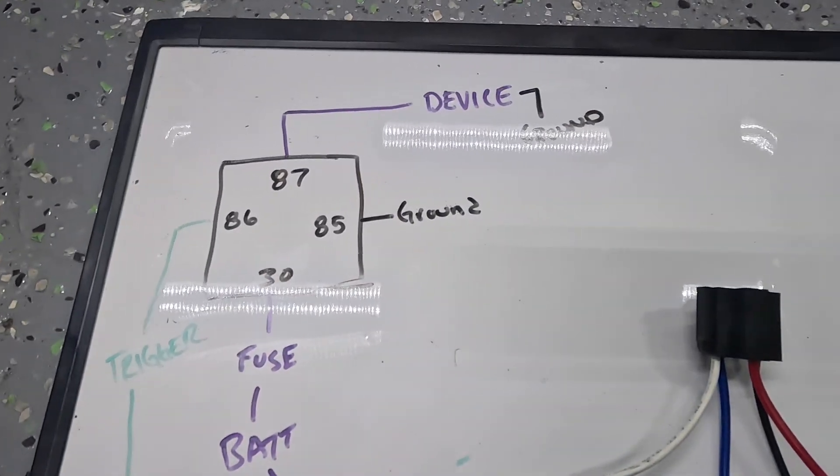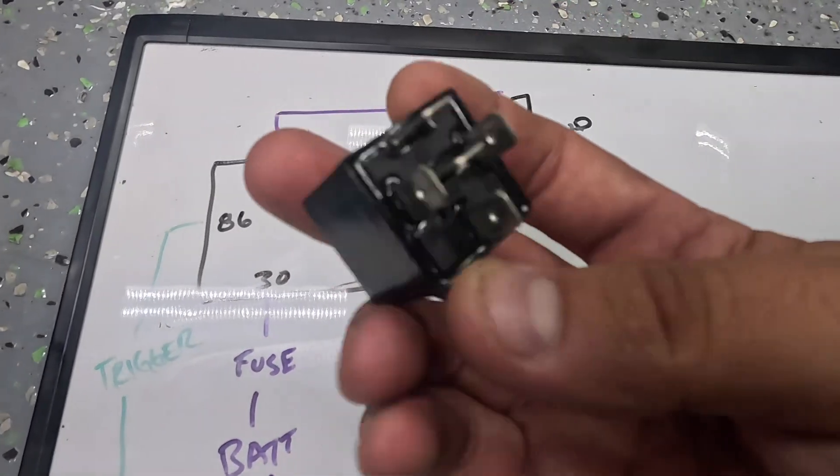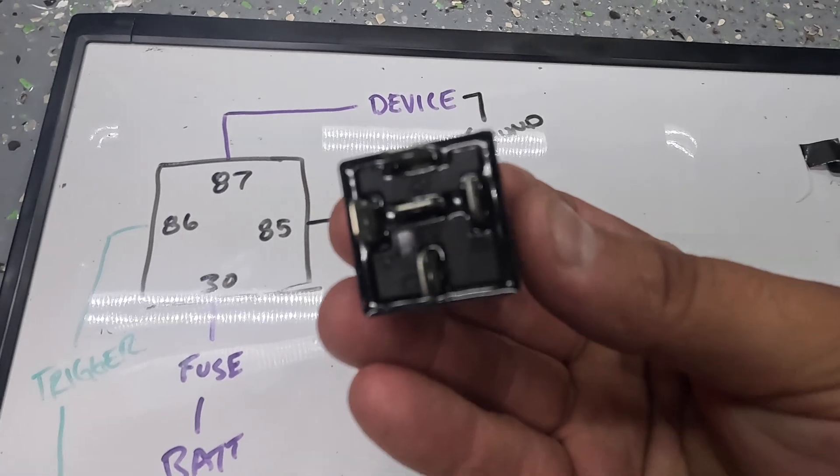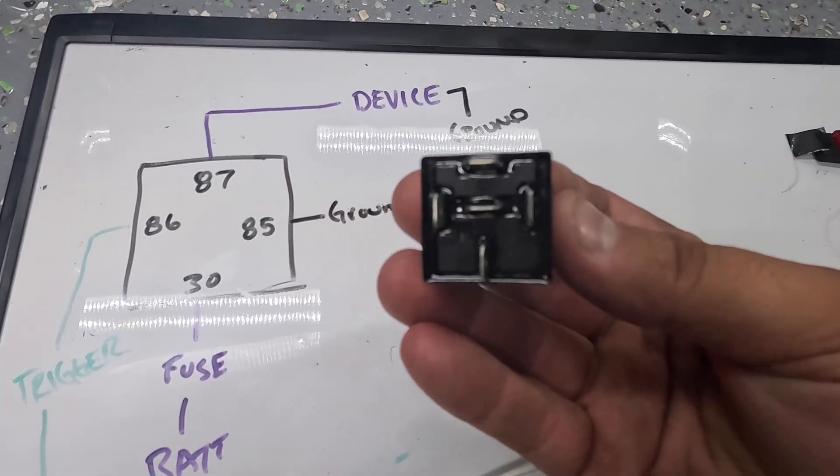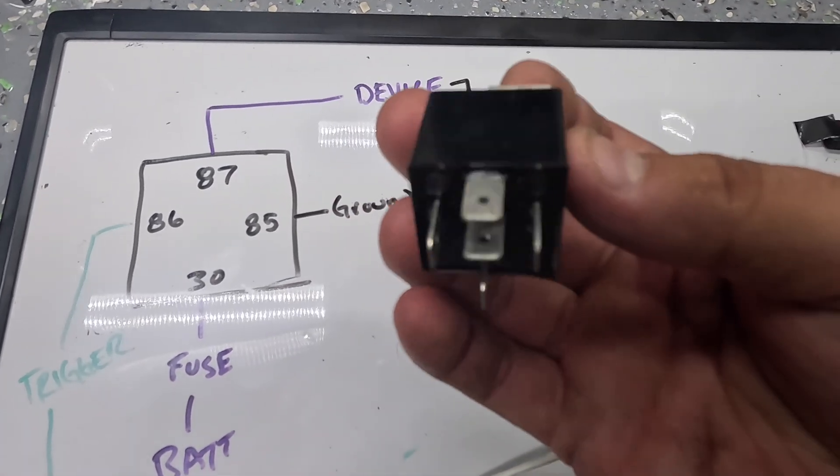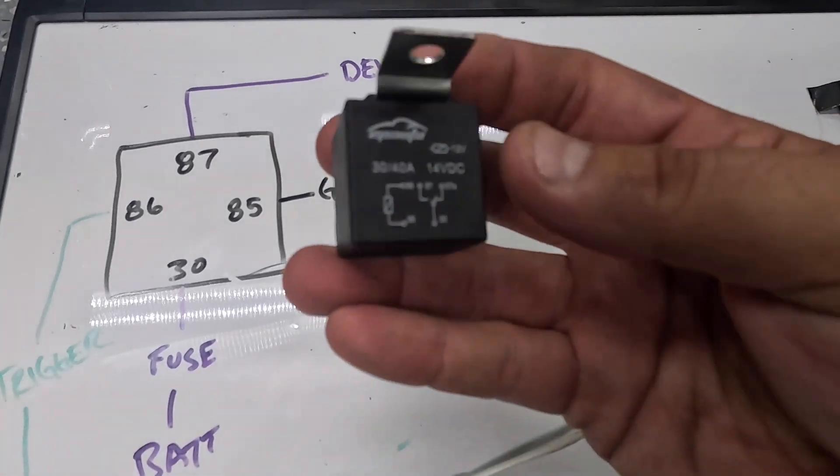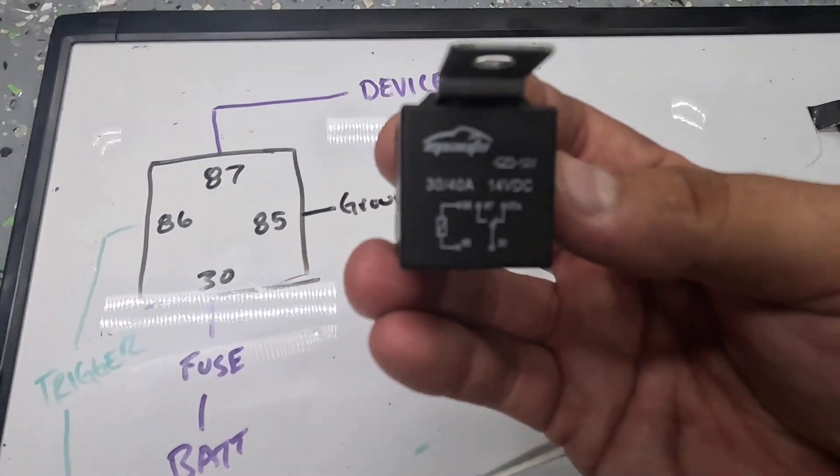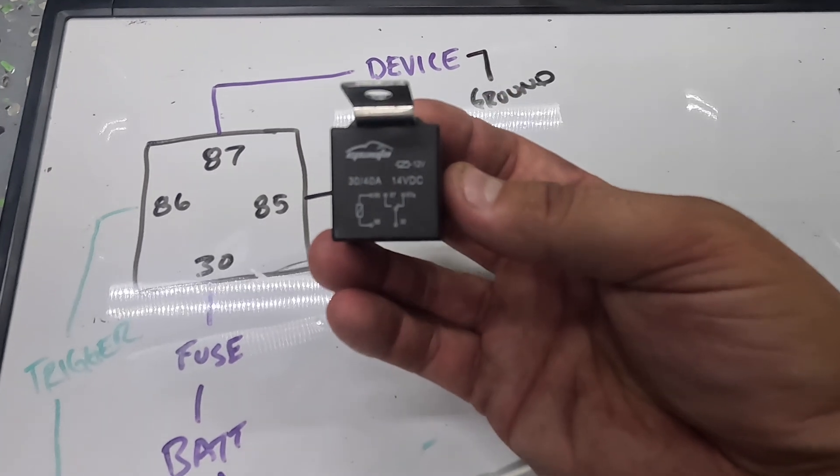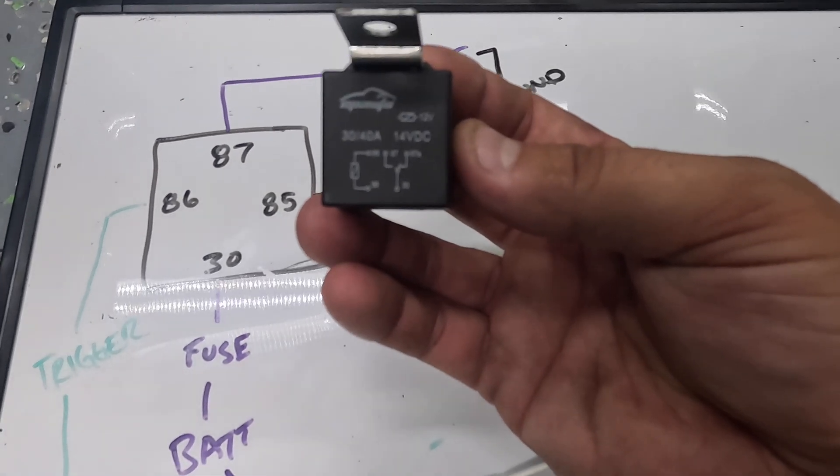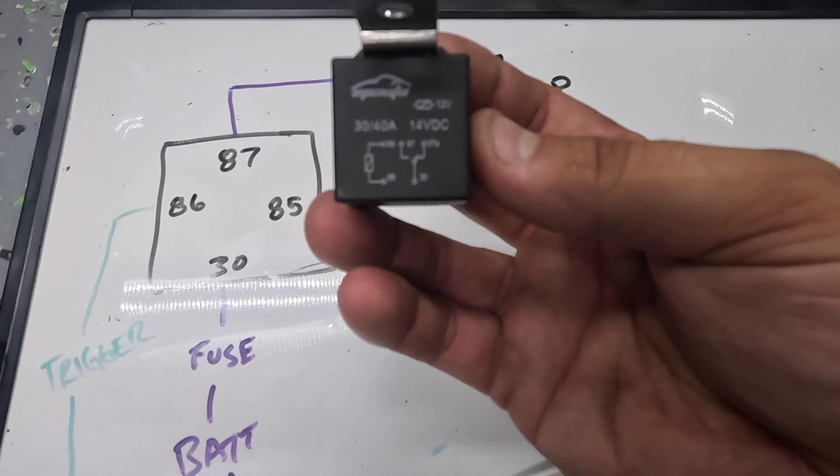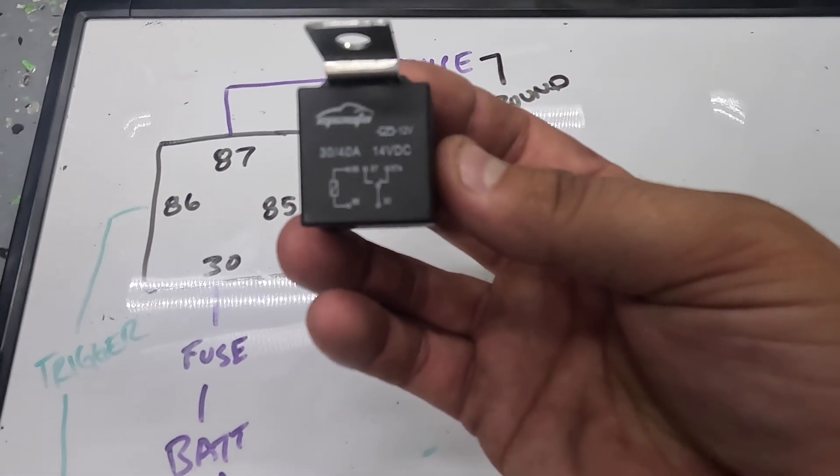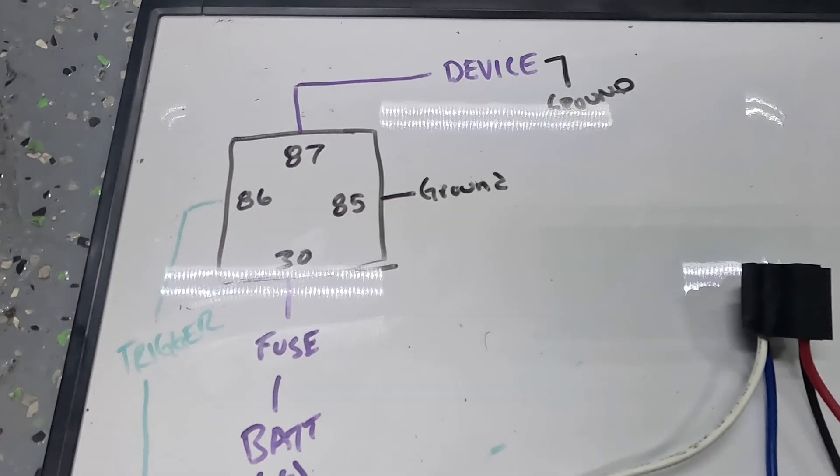If you look at the bottom of any relay, you'll see that there's numbers on the bottom. You've got 87, 85, 30, and 86. Typically you'll also have a schematic on the top. Basically there is a coil side and then there is a battery side. There's basically two switches. So one side is going to be battery power and the other side is going to be your trigger.